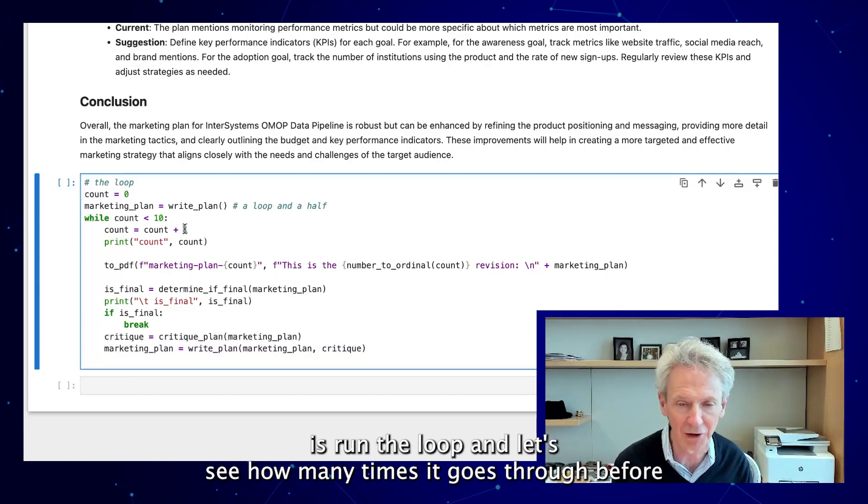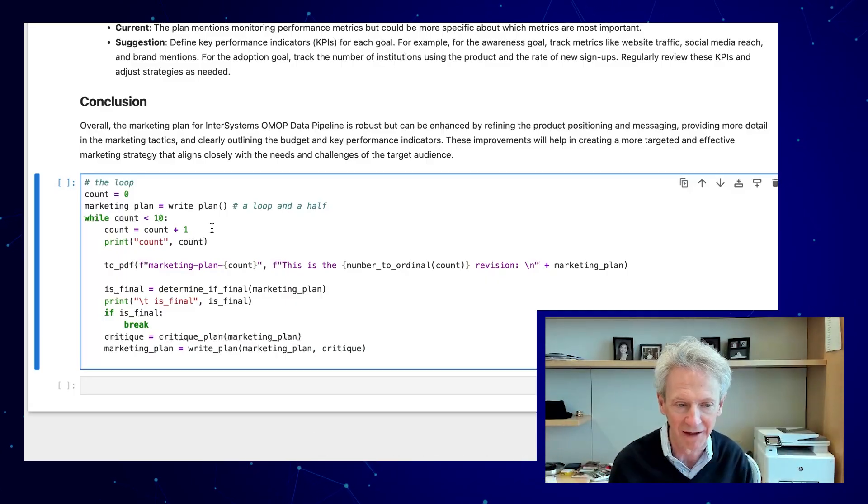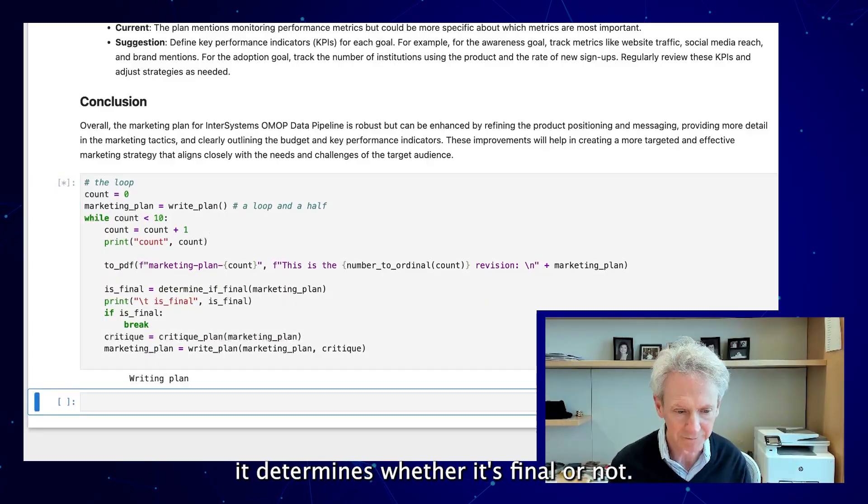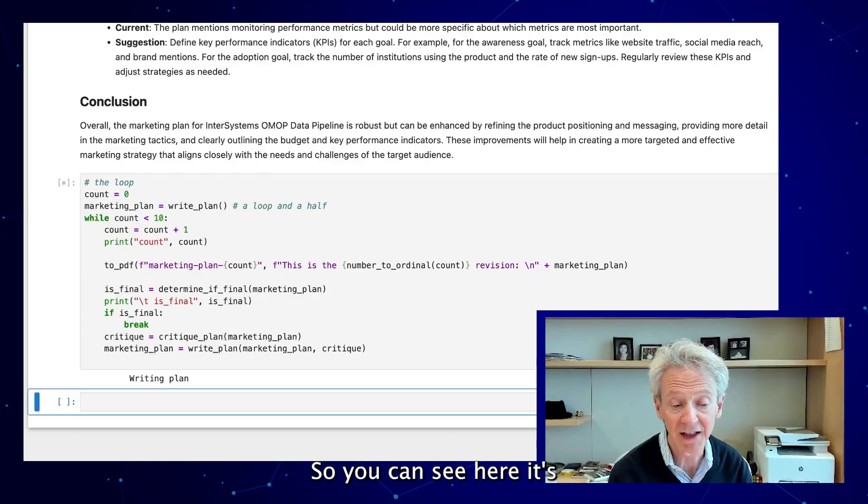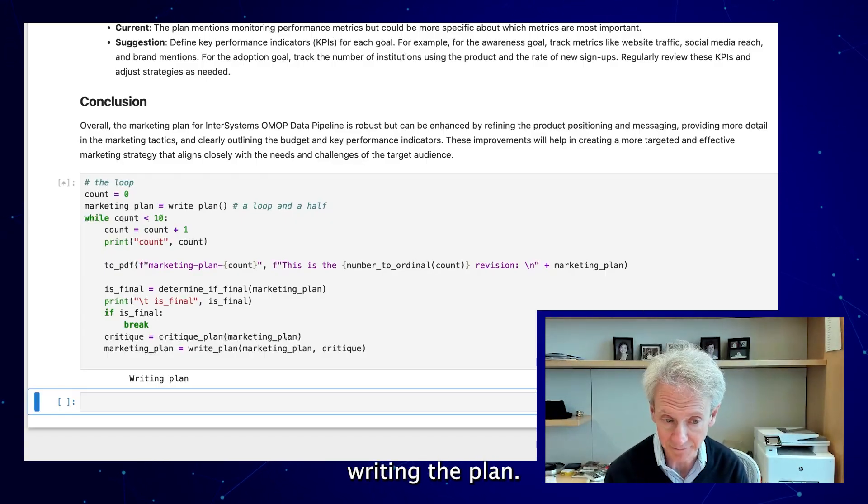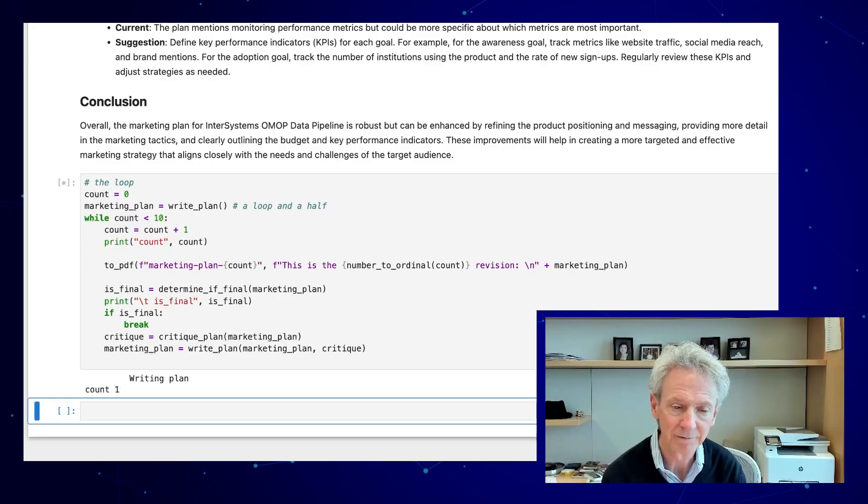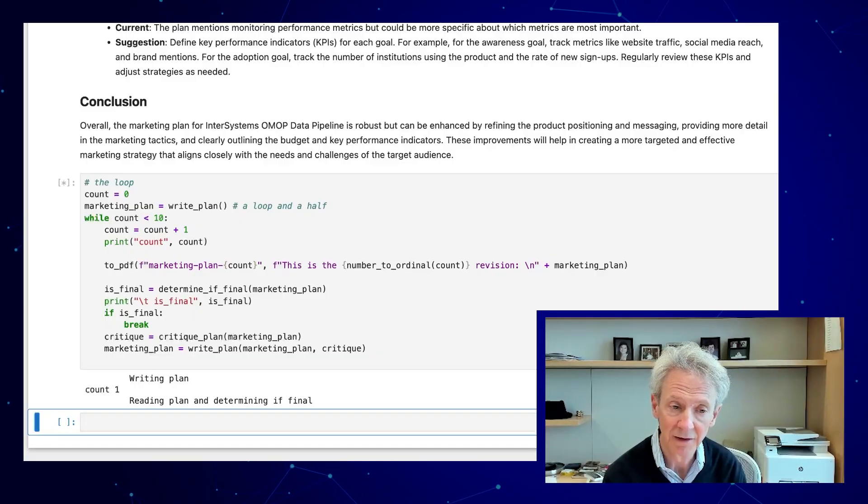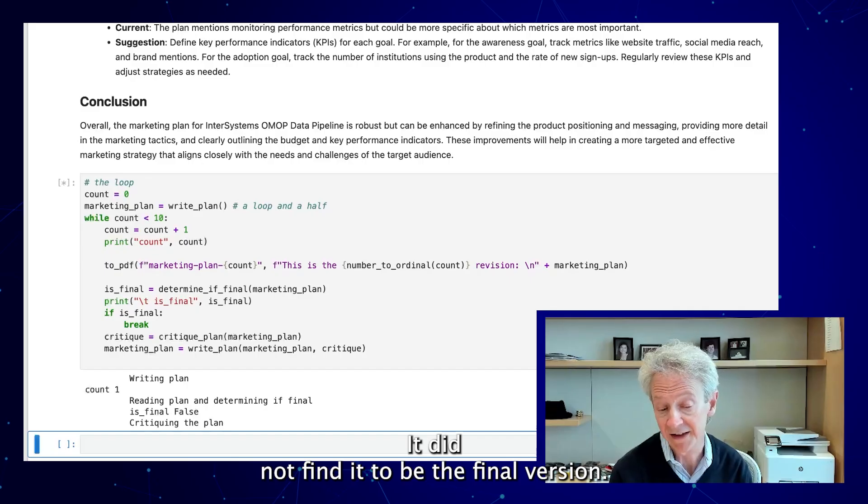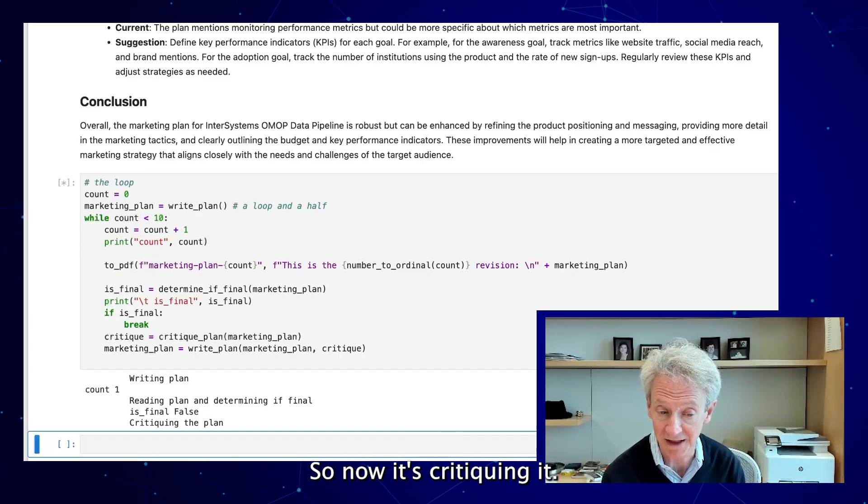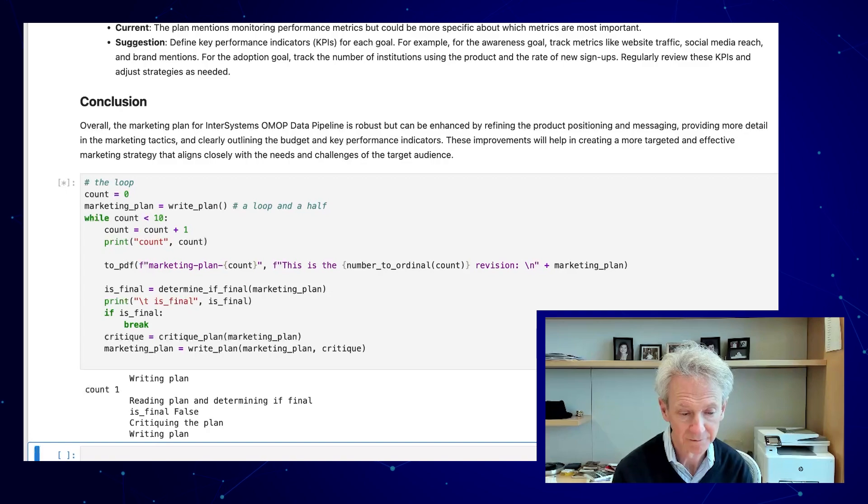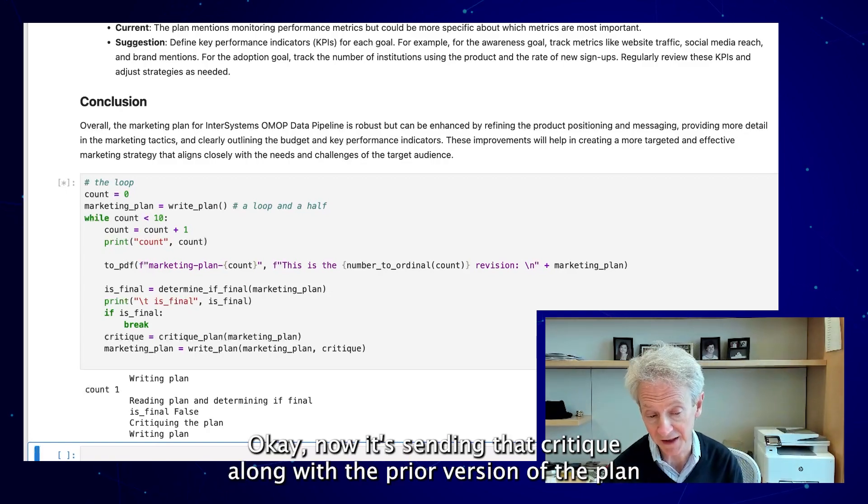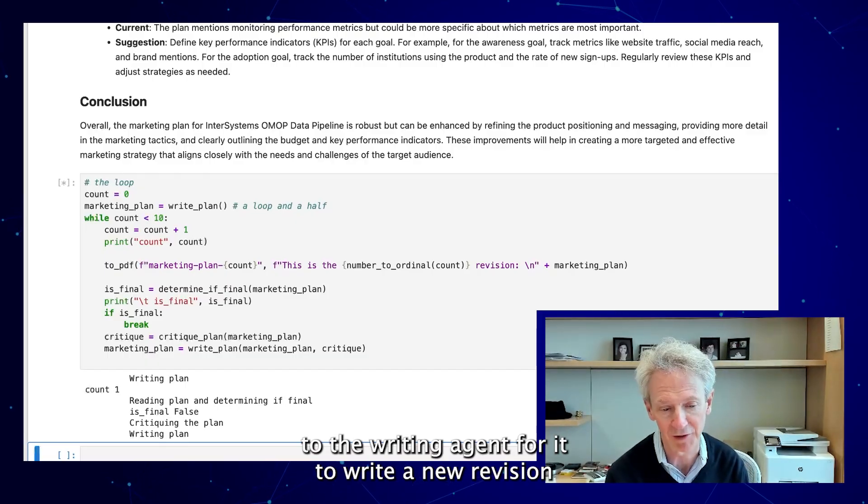So what I'm going to do now is run the loop and let's see how many times it goes through before it determines whether it's final or not. So you can see here it's writing the plan, reading it to determine if it's final. It did not find it to be the final version. So now it's critiquing it. Now it's sending that critique along with the prior version of the plan to the writing agent for it to write a new revision of the plan.